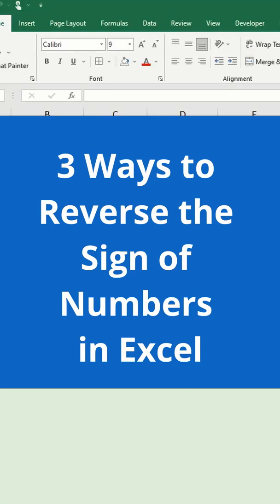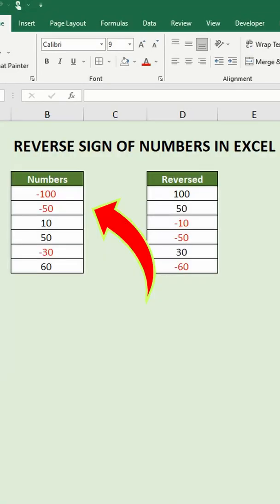I'm going to show you three ways to reverse the sign of numbers in Excel. Here we have some mixed numbers. We want to change the negative numbers to positive numbers and the positive numbers to negative numbers.